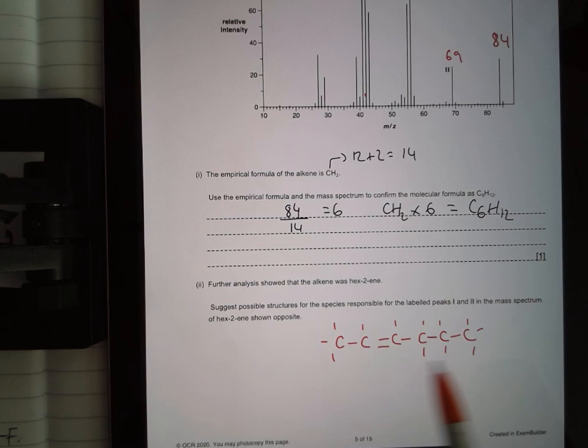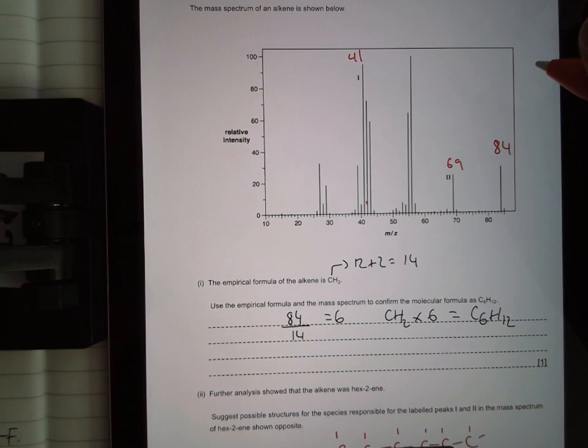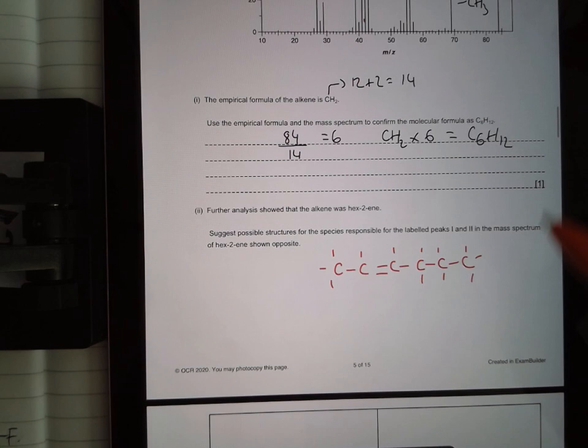The next example, I've drawn C6H12 out here in full, and they want possible structures for peaks 1 and 2. So if I start here at 84 to get to peak 2, which has a peak of 69, I have to lose 15. And if I'm losing 15, like I've seen before, I know I'm losing a CH3.